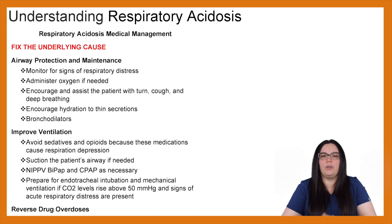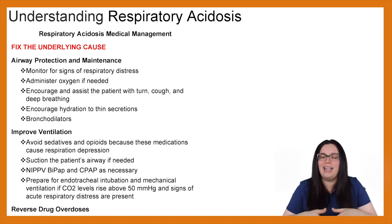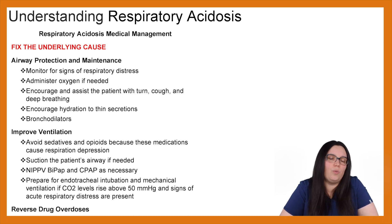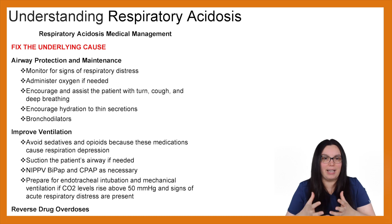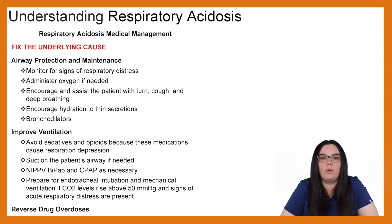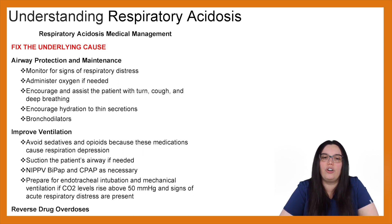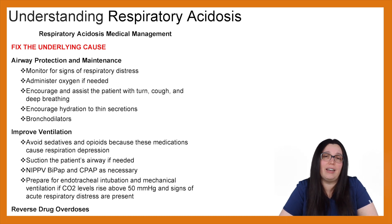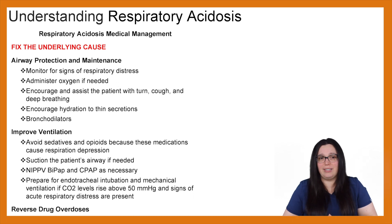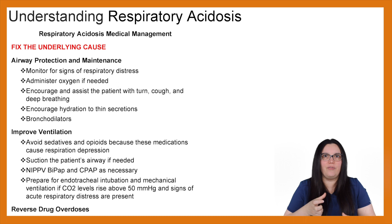Medical management for respiratory acidosis patients focuses first on fixing the underlying cause. We always want to protect and maintain the airway, monitor for signs of respiratory distress, administer oxygen if needed, and encourage the patient to turn, cough, and deep breathe to help exhale that acid. Encourage hydration to thin out secretions if that's a potential cause, and use bronchodilators if there's any airway obstruction. We also want to avoid sedatives and opioids because these medications can further worsen respiratory acidosis due to their respiratory depression side effects.